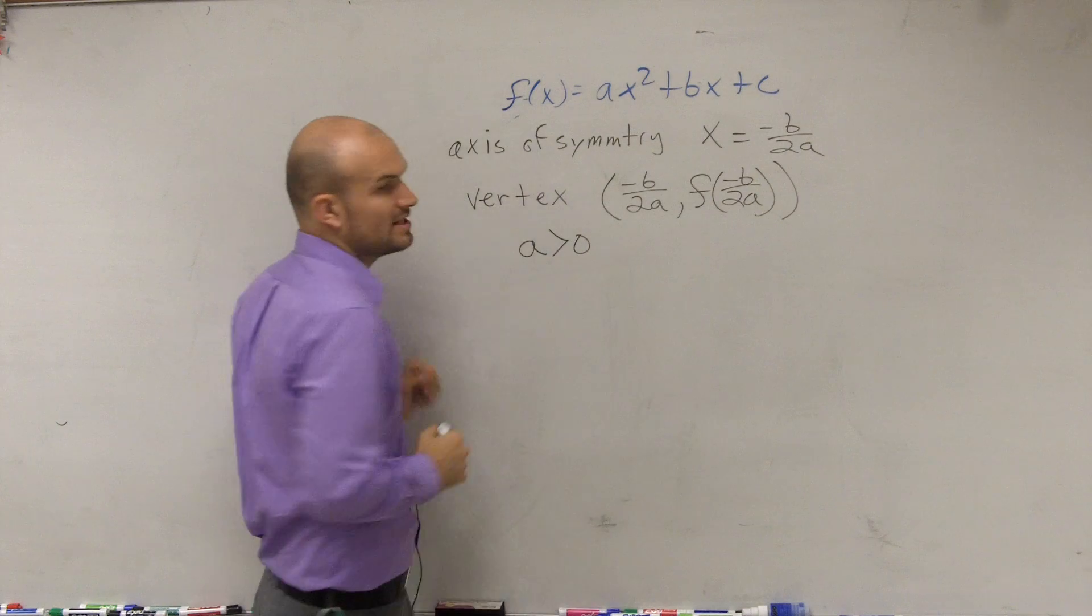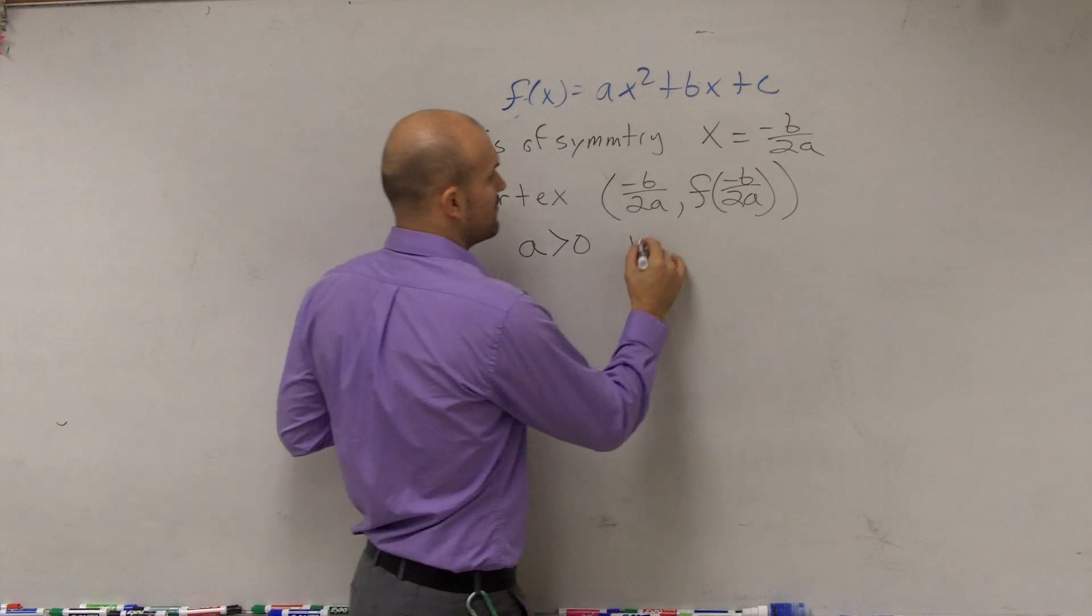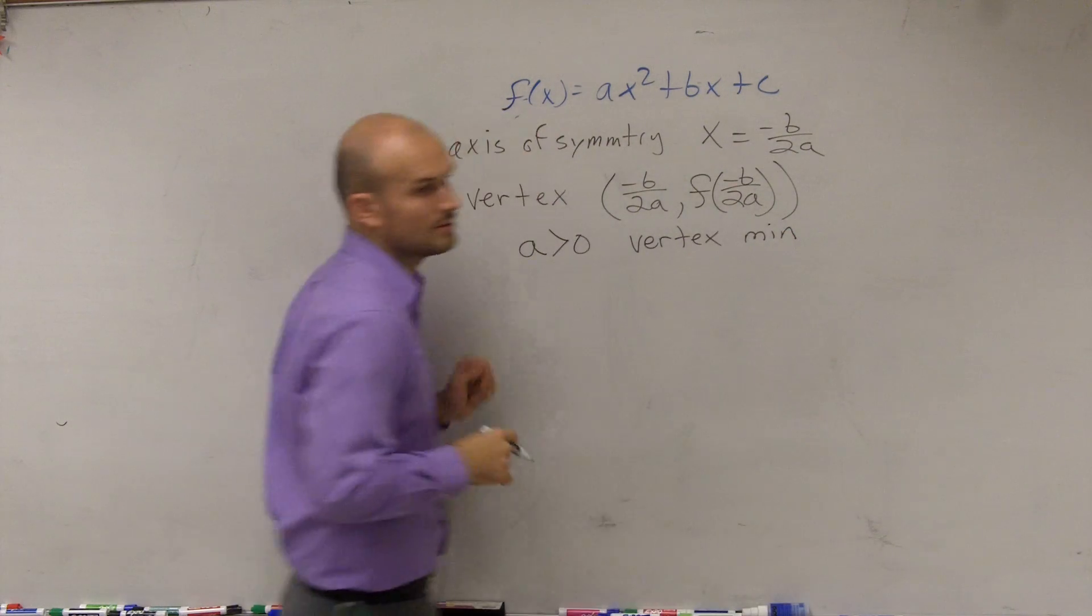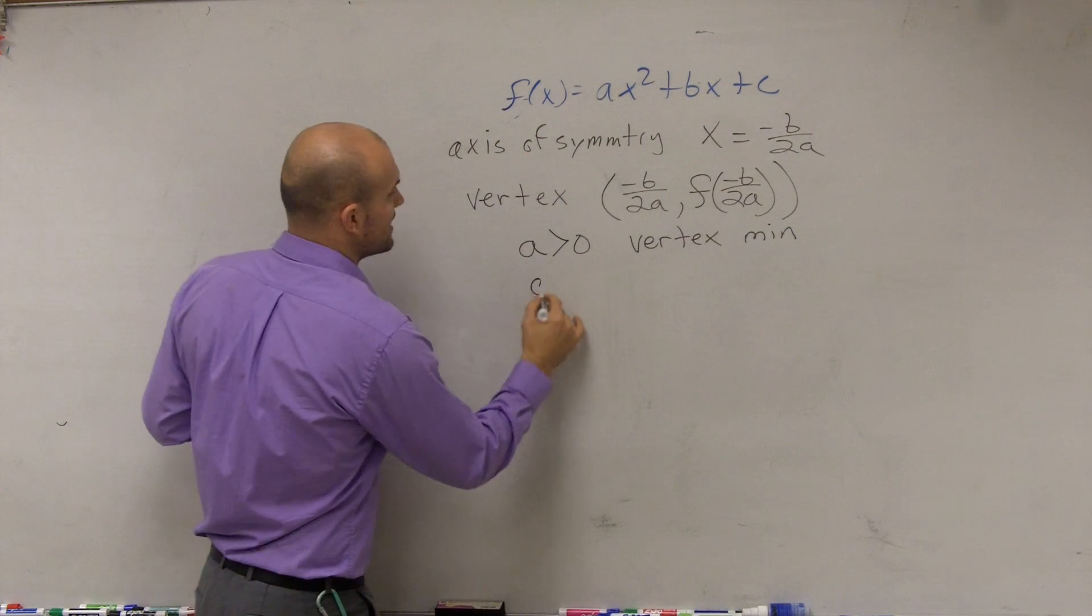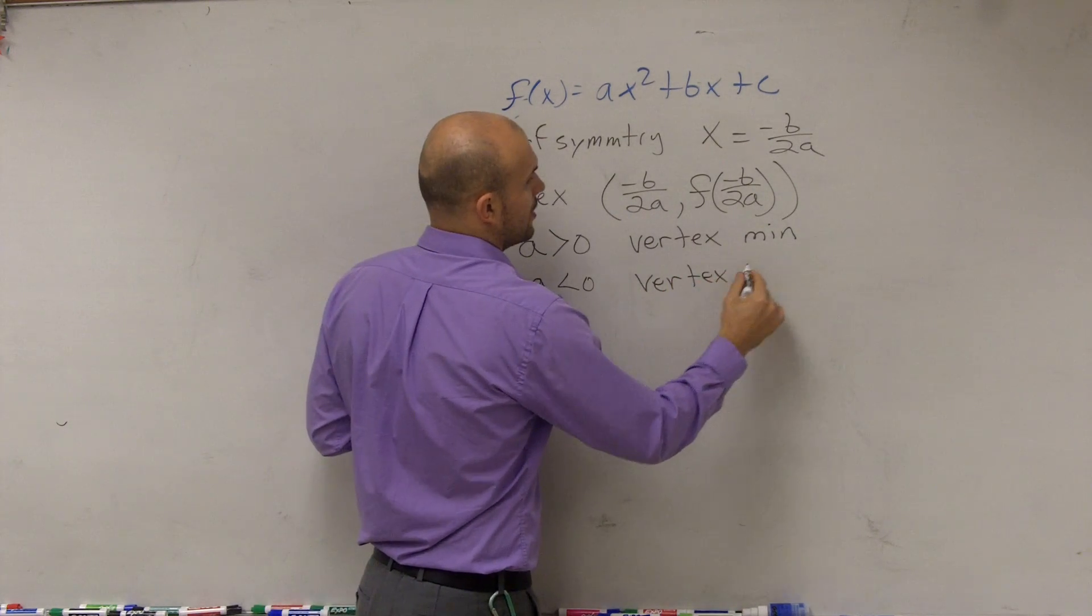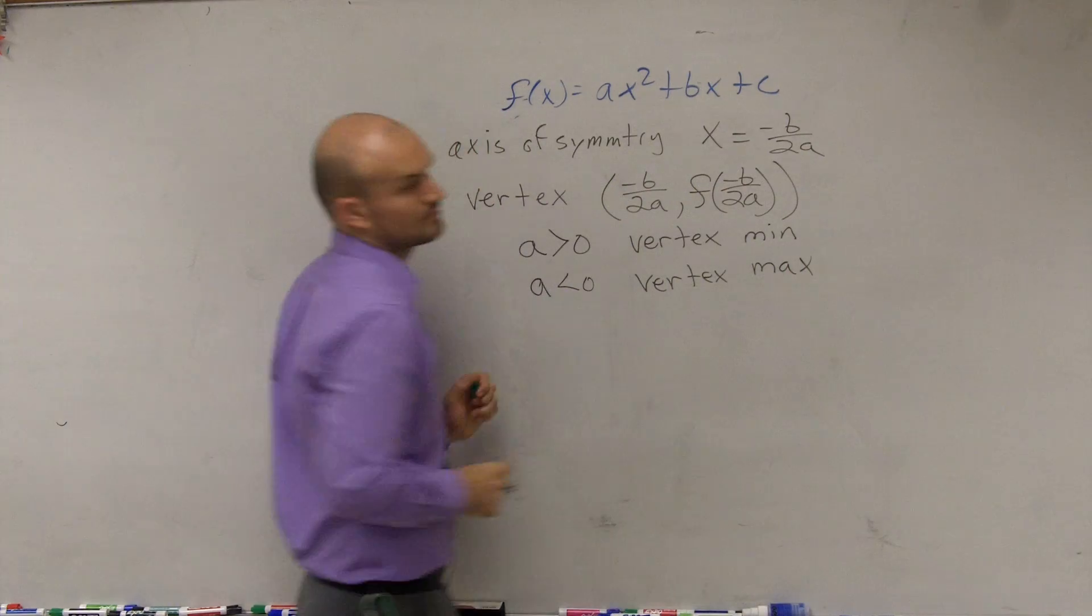If a was greater than 0, then we said our vertex was a minimum point. Then we said if a was less than 0, then we said our vertex was a maximum point.